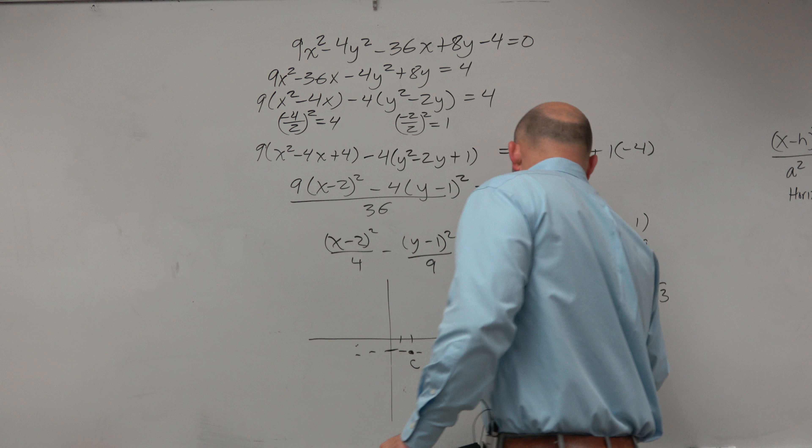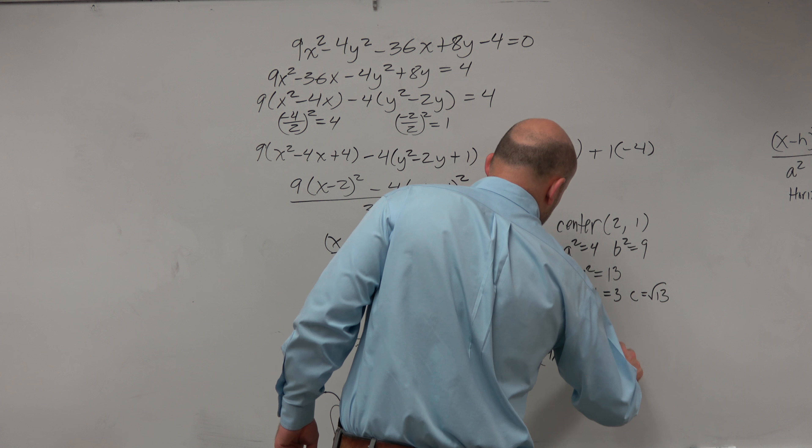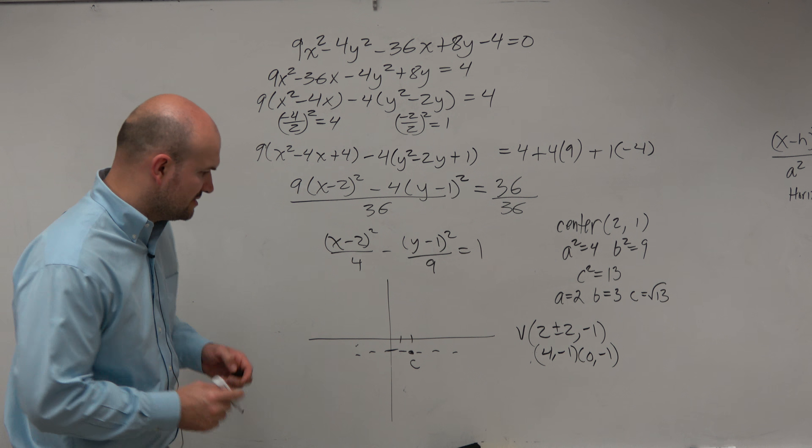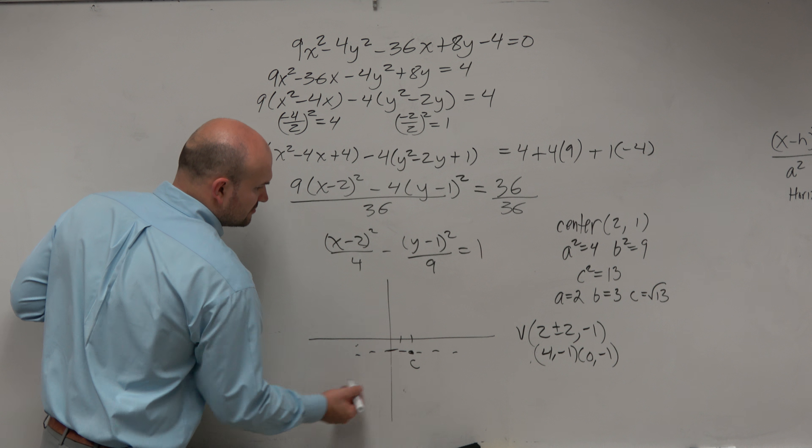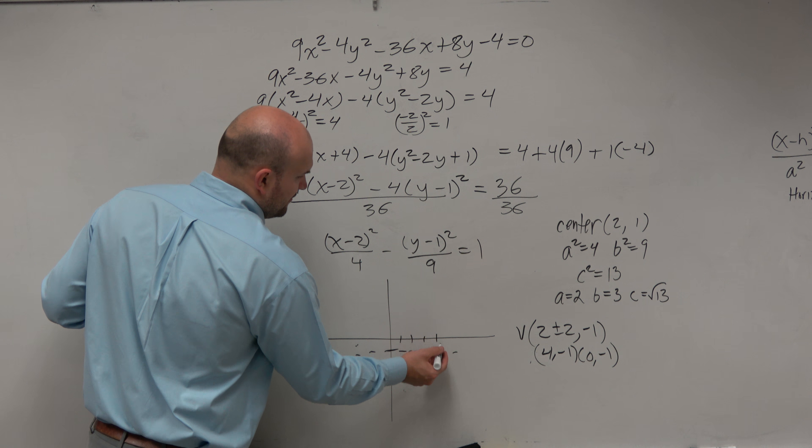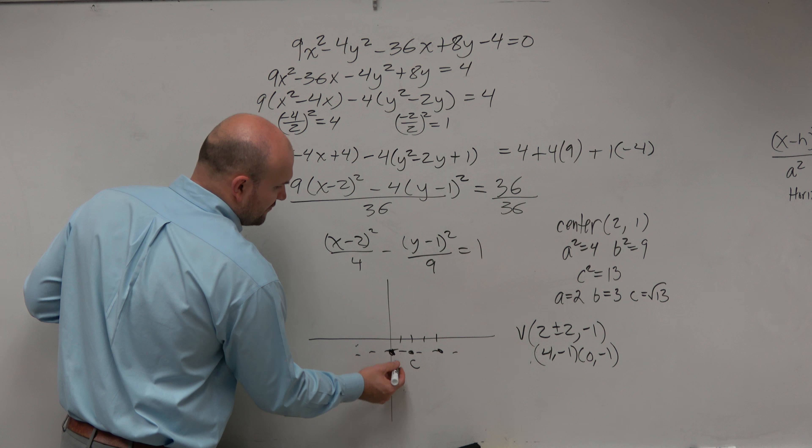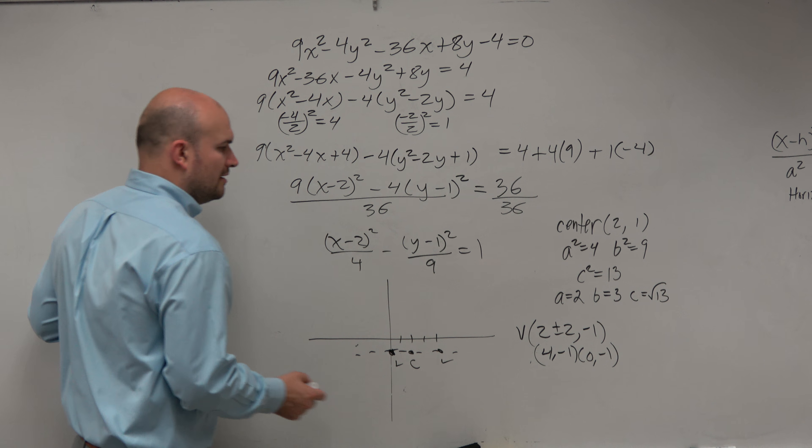Let's go ahead and just do a rough little sketch here. So my center is at 2, negative 1. I have a horizontal transverse axis. So that means my vertices are going left and right from the center. So my vertices are going to be a value of 2 going left and right from the center. So just to keep this short, guys, I'm just going to do, I'm not going to simplify it. It's going to be 2 plus or minus 2 minus 1. Right? You're adding the 2. You're adding the a to the h-coordinate of the center.